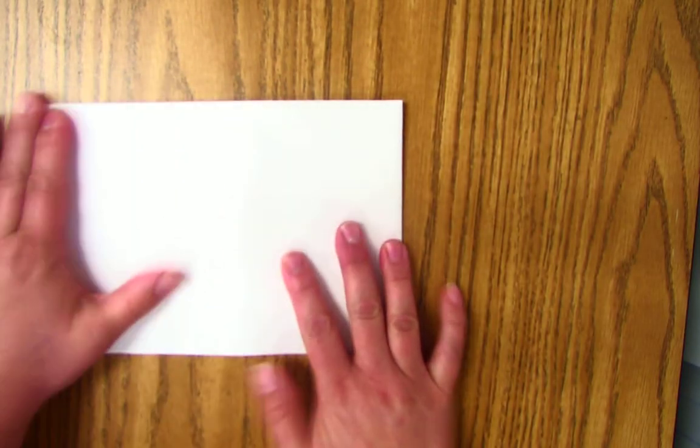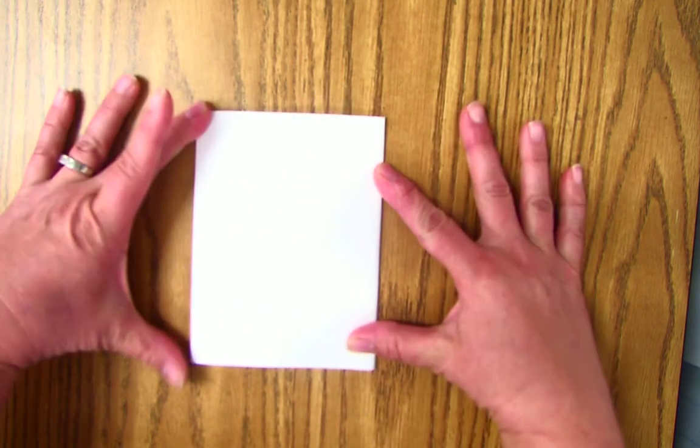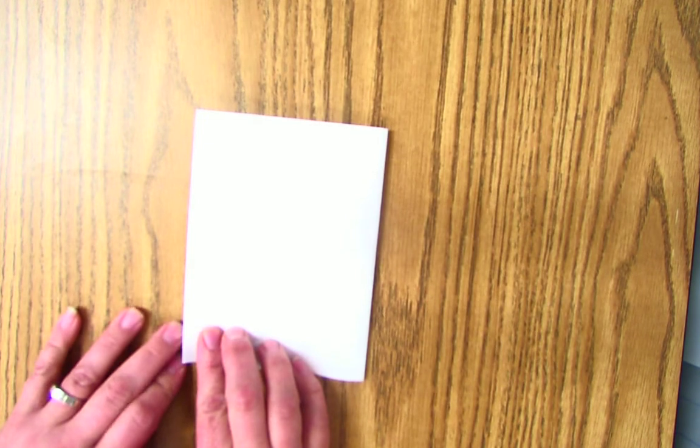And you're going to fold it in half once, fold it in half again, so you're going to have a little square like this. But that's only so you know where these lines are.